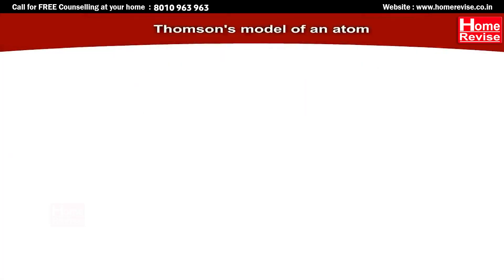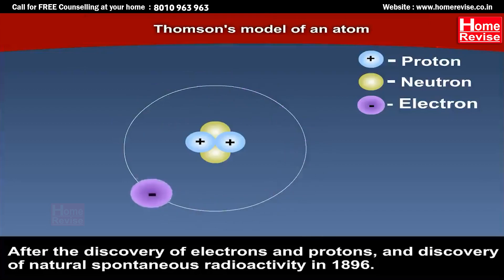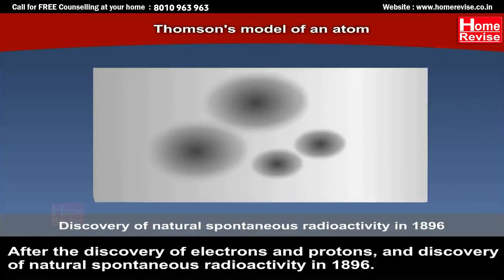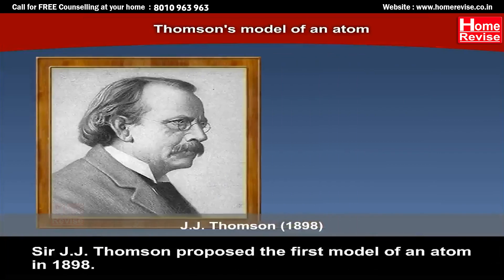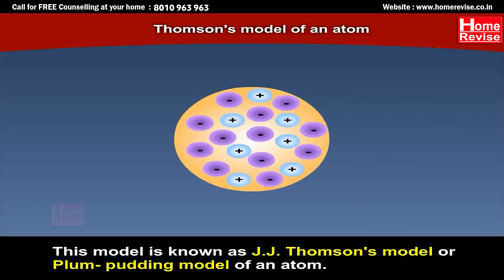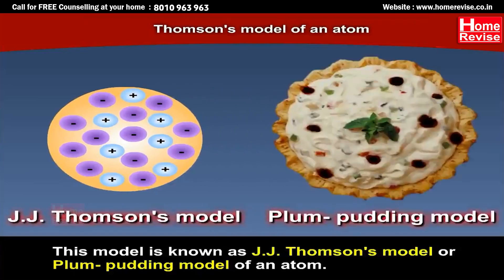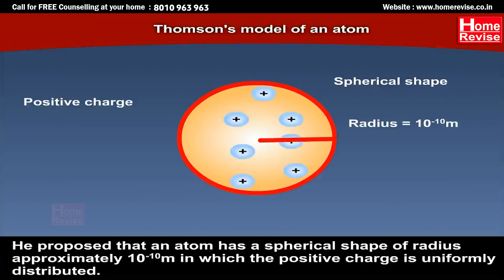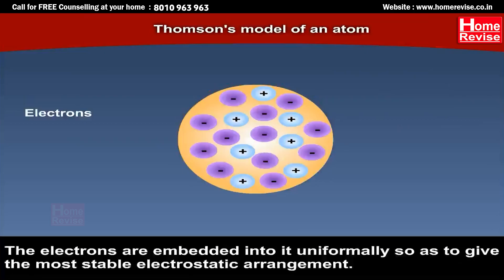Thompson's Model of an Atom. After the discovery of electrons and protons, and the discovery of natural spontaneous radioactivity in 1896, Sir J.J. Thompson proposed the first model of an atom in 1898. This model is known as J.J. Thompson's Model, or the Plum Pudding Model of an Atom. He proposed that an atom has a spherical shape of radius approximately 10⁻¹⁰ meters, in which the positive charge is uniformly distributed.